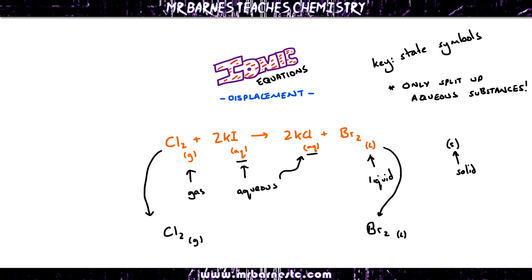For the aqueous solutions, you need to work out what the ions are. Potassium is in group 1 — it has one electron in the outer shell, loses that electron, and becomes K+. There are two of them in the balanced equation, so we put 2K+ below. Iodine is in group 7, so it gains one electron and becomes I−. Again, we've got two of them, so it's 2I−.